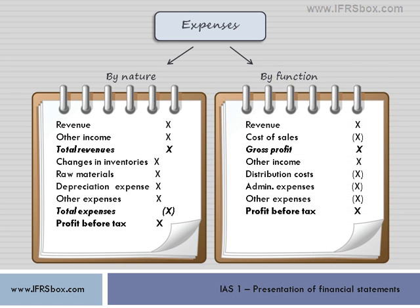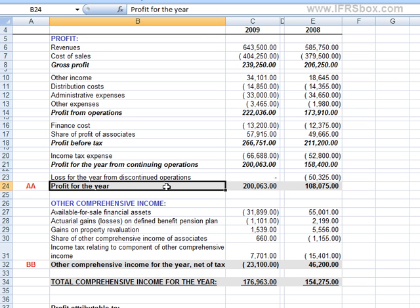In the by-function method, the company must allocate expenses as part of cost of sales at minimum. For example, depreciation of a production factory hall would be presented as a cost of sales expense, and depreciation of an administrative building as an administrative expense. In by-nature statements, such a breakdown is not required — depreciation would simply go to the same line called depreciation. As we can see from our example, expenses are presented by function here.